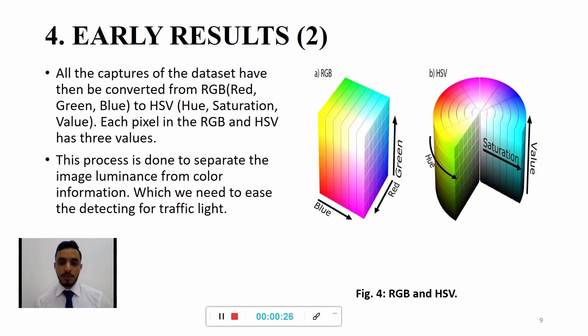Moreover, every image that have been captured in the dataset has to be converted from RGB type to HSV. The purpose of doing that is to separate the image illumination from the color information. Moreover, every pixel of the RGB has 3 values which is blue, red, green. Then they will have to be converted to HSV to another 3 different values: hue, saturation, and value.